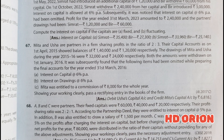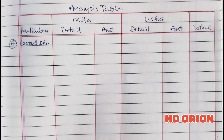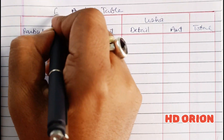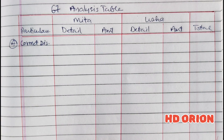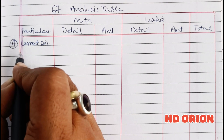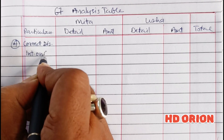So let us see the detailed explanation of this in the solution. Solution 67. First we will prepare the analysis table and see the correct distribution — what was supposed to be given to the partners. First is interest on capital.